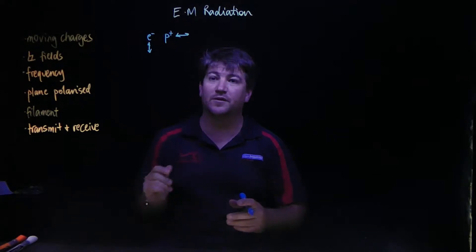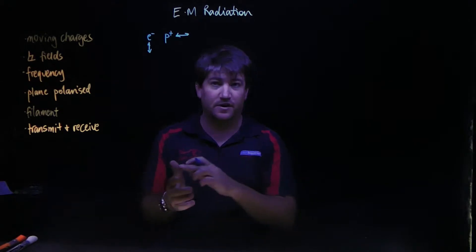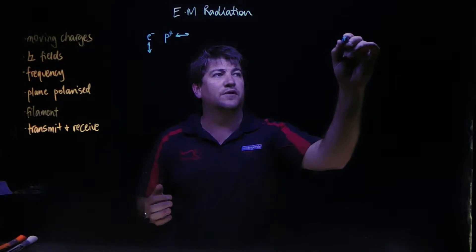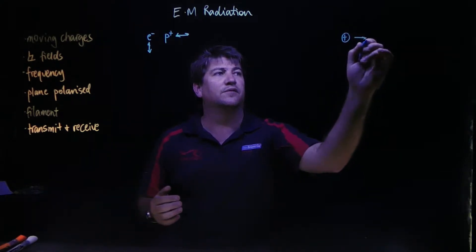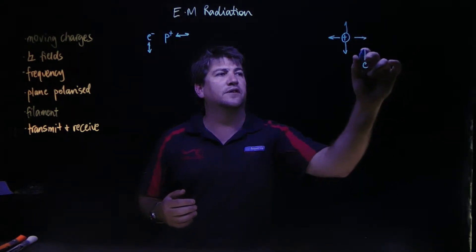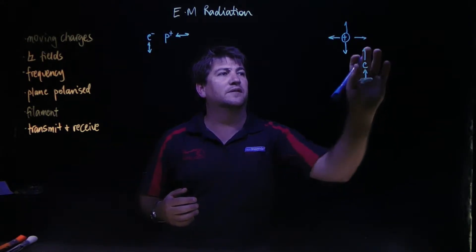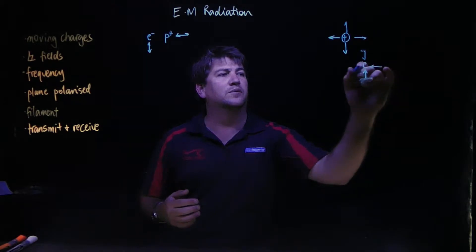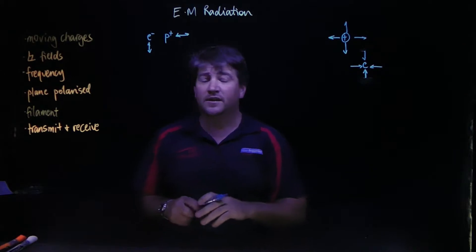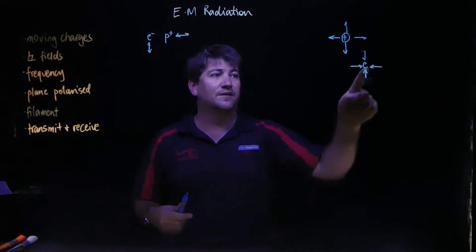Hopefully you remember from the electric fields part of the course - if you have an electron or a proton, any sort of charges, they have electric fields around them. A positive charge has an electric field radiating outwards, a negative charge has the field going in towards it. So outer positive, into negative.